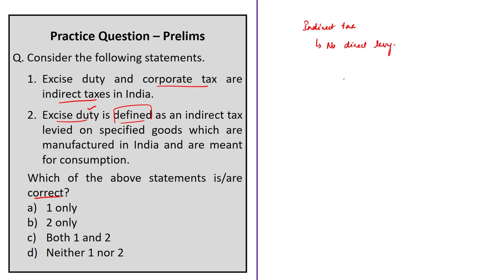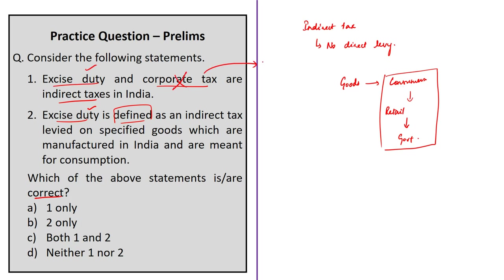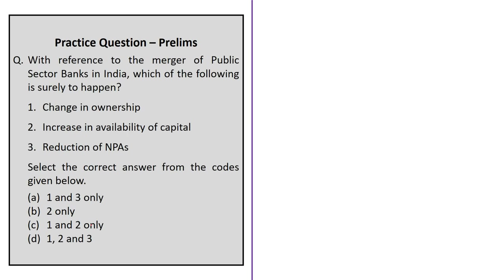Consumers pay through their bill to the shopkeeper, who pays the tax to the government on behalf of the consumer. Excise duty is an indirect tax, whereas corporate tax is not — it is income tax paid by companies directly to the government. So the first statement is incorrect. The second statement defines excise duty as an indirect tax levied on specified goods manufactured in India and meant for consumption — this is correct. The correct answer is option B: statement 2 only.